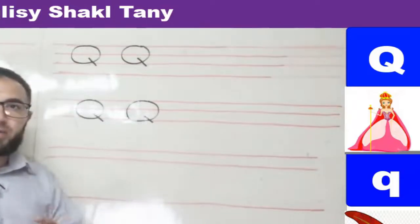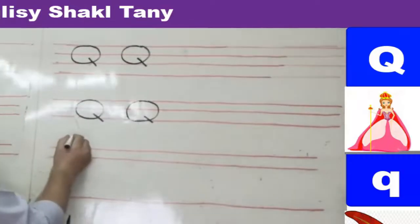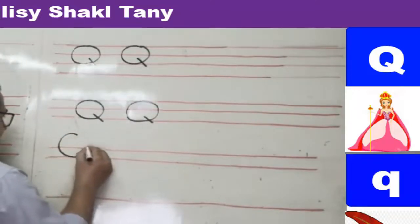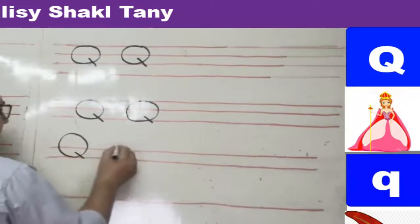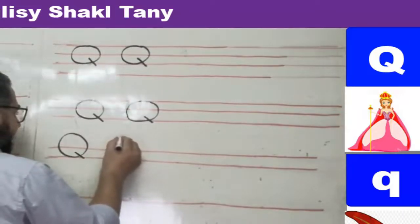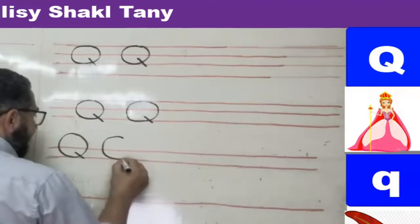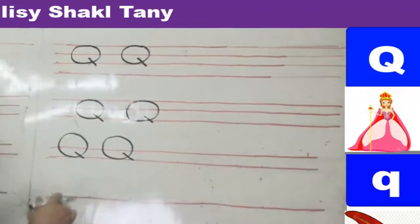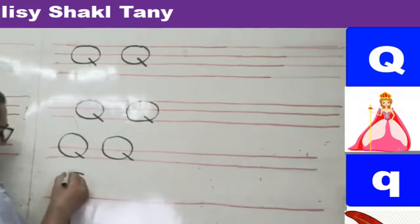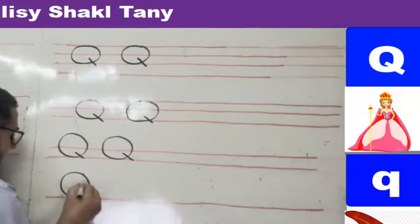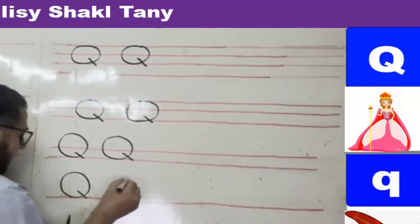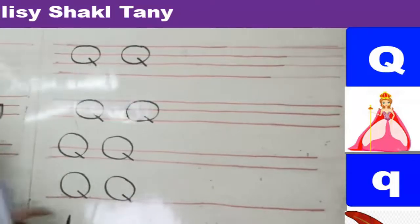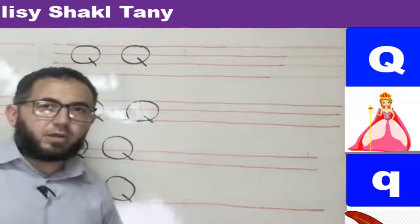On two lines, start from the top of the two lines, make the circle going down to the second line — you must touch the second line — then add the diagonal line. On a single line, it's like the letter O — a circle — then a diagonal line. That's capital Q on one, two, or three lines.